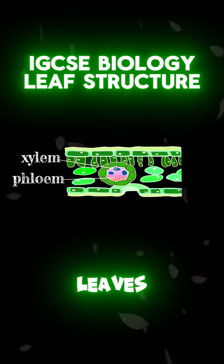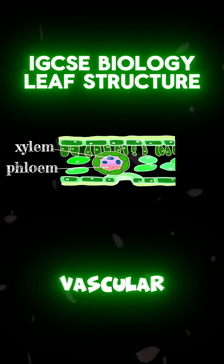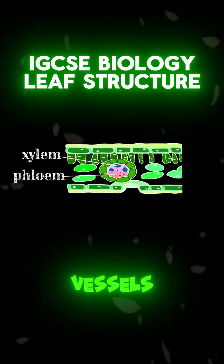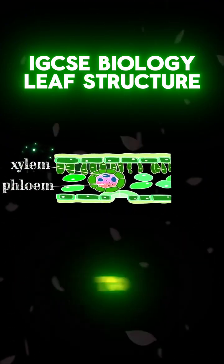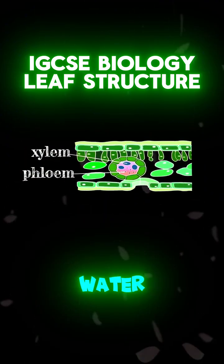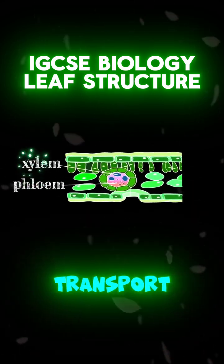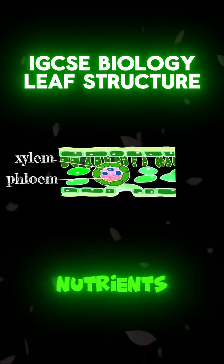Lastly, leaves contain vascular bundles which are made of two types of vessels: xylem to transport water and minerals, and phloem to transport organic nutrients.